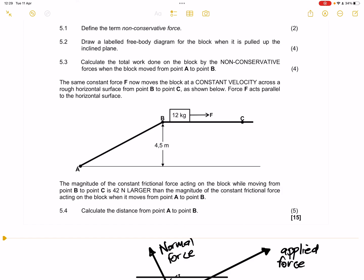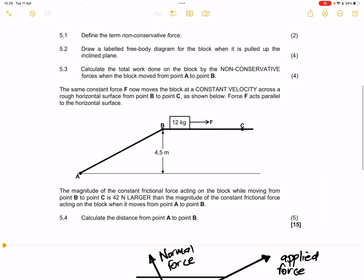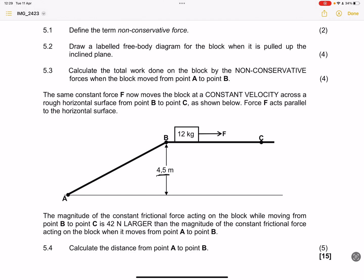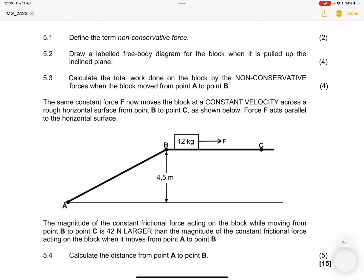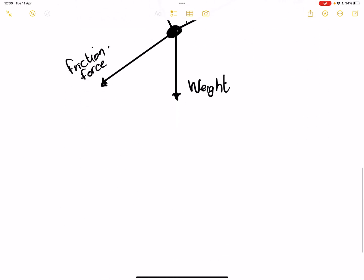The next question they say to us, calculate the work, the total work done on the block by non-conservative forces when the block moves from A to B. Now, note they've given you a vertical height of 4.5 there and there's no angle that's given for the incline. So usually when that is the case, ladies and gents, I'd say, please do not even waste your time. We're going to use the work done by non-conservative forces.